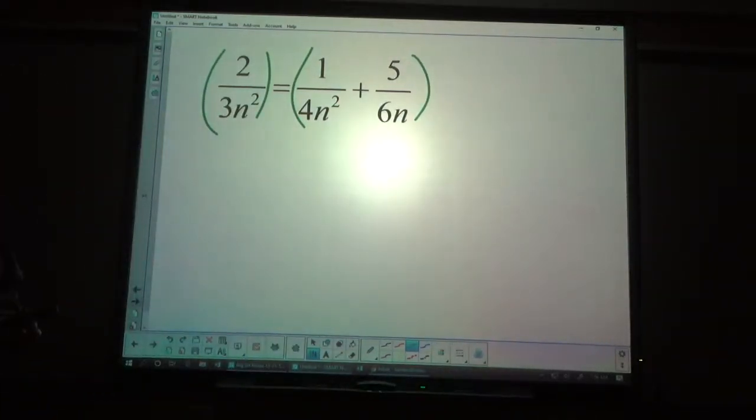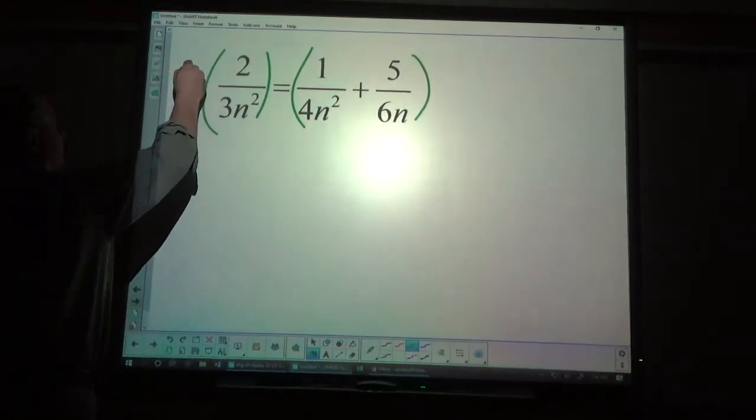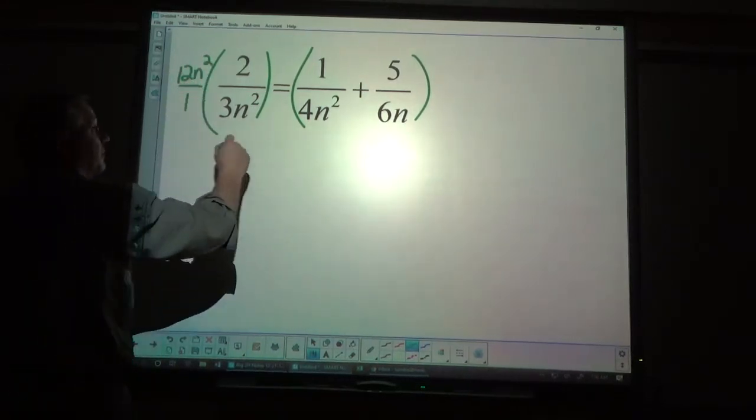If a variable is there, you know you need to use the biggest exponent for that variable, n squared. And, in addition to that, the coefficient, what's the smallest number that 3, 4, and 6 all go into, and that would be 12. So, 12n squared is what I'm going to multiply by.